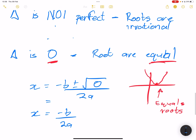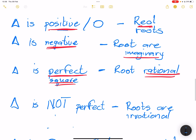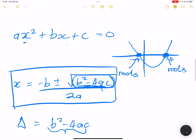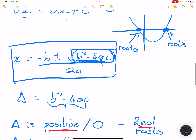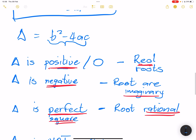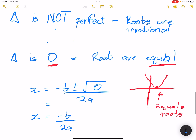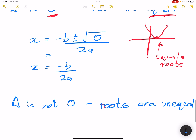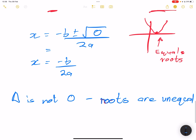That is how the cookie crumbles when it comes to the nature of roots. What I would like to do next is take some examples of how we can apply this in practical mathematical equations.